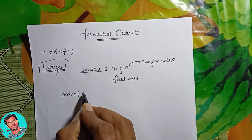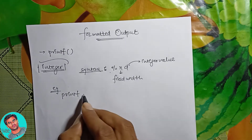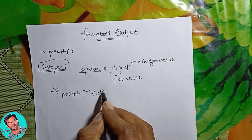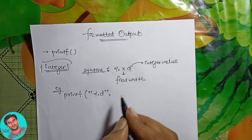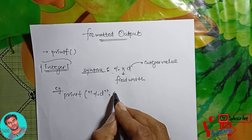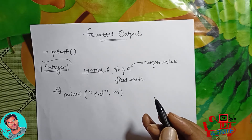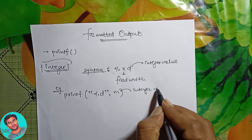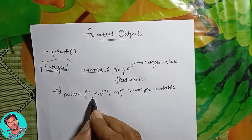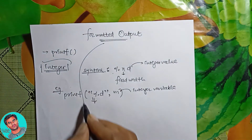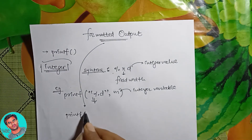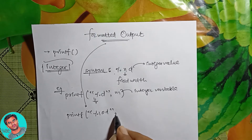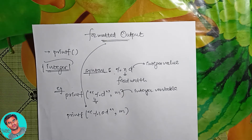For example, a simple printf statement uses %d and produces the value of m, where m is an integer variable. When converting to a formatted output, it looks like this: printf("%10d", m), where 10 is the field width, and m is the variable.